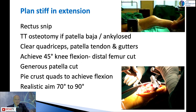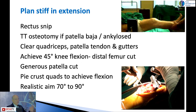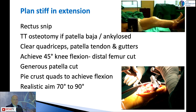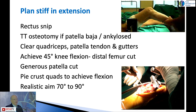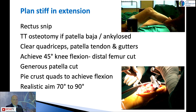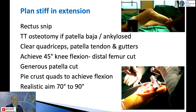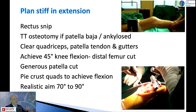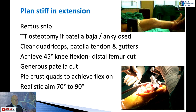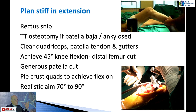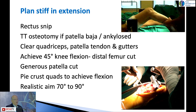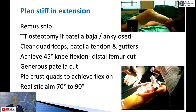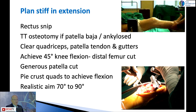When dealing with a knee that is stiff in extension, that's a much more difficult situation. You can mostly approach them with a rectus snip alone. A tibial tubercle osteotomy is a good option if there is a patella baha or if the knee is ankylosed, because you can then translate the osteotomy proximally to regain quadriceps length. The approach is: first clear the quadriceps, clear all adhesions under the quadriceps and patella tendon, then move to the gutters and clear them out completely.